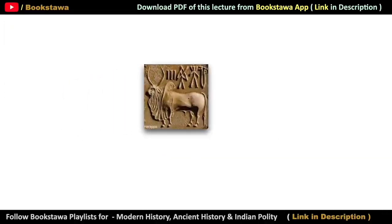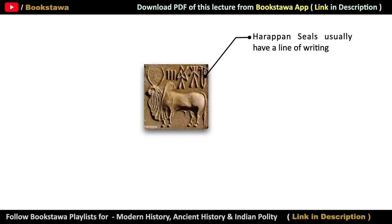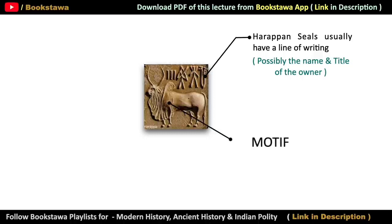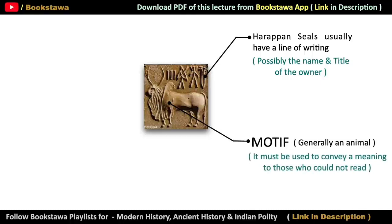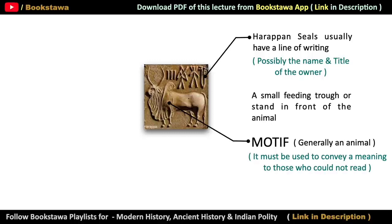Usually something used to be written on the seals in Harappan script. The Harappan script could not be deciphered yet, so it cannot be said what was written on it, but it is believed it must be the name and title of the owner or the merchant. Along with this, there used to be a motif on the seal, generally of some animal. Those who were illiterate could understand who the owner was by looking at the motif. Apart from this, there used to be a small feeding trough or feeding container for animals on some seals.